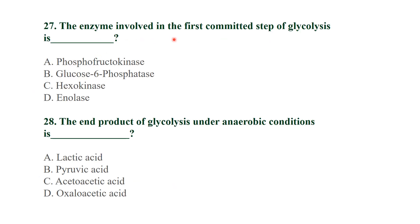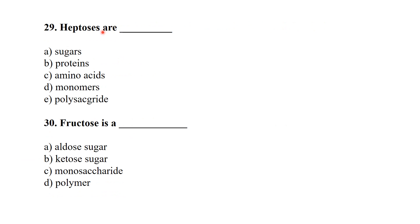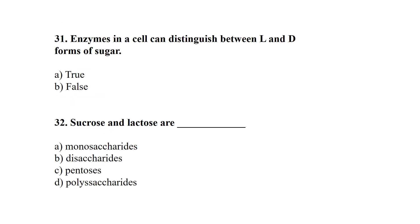The enzyme involved in the first committed step of glycolysis is hexokinase. The end product of glycolysis under anaerobic conditions is lactic acid. Heptoses are seven-carbon sugars. Fructose is a keto sugar. Enzymes in a cell can distinguish between the L and D forms of a sugar — yes, this is true.